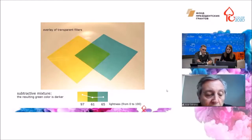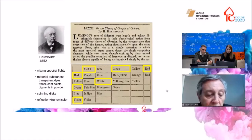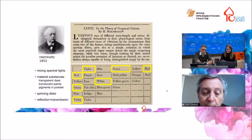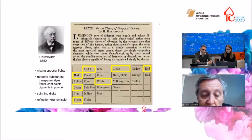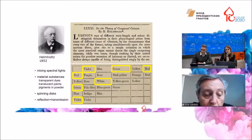In 1852, Helmholtz discussed in detail the results of using different procedures to mix colors. One of them is mixing spectral lights. He selects red, green, and violet and obtains white by mixing all three.